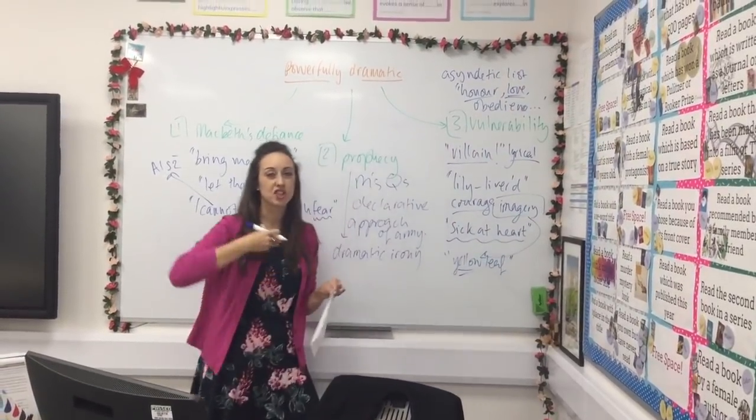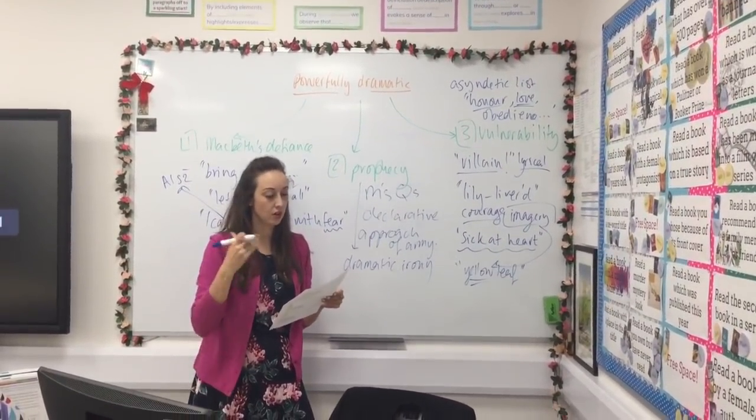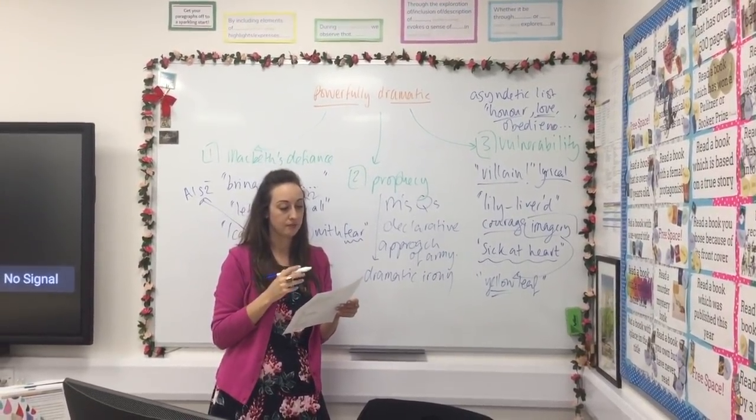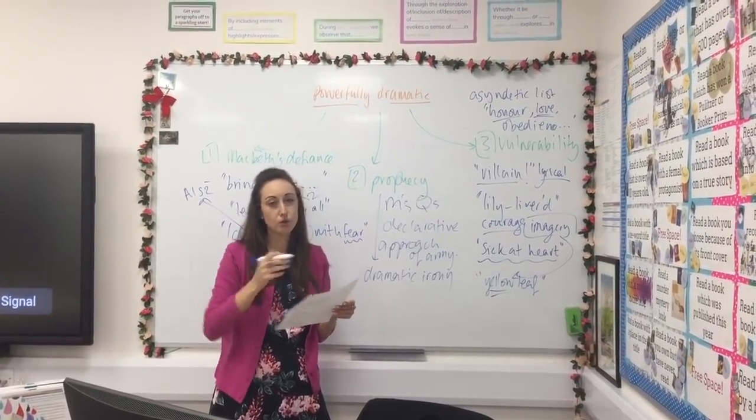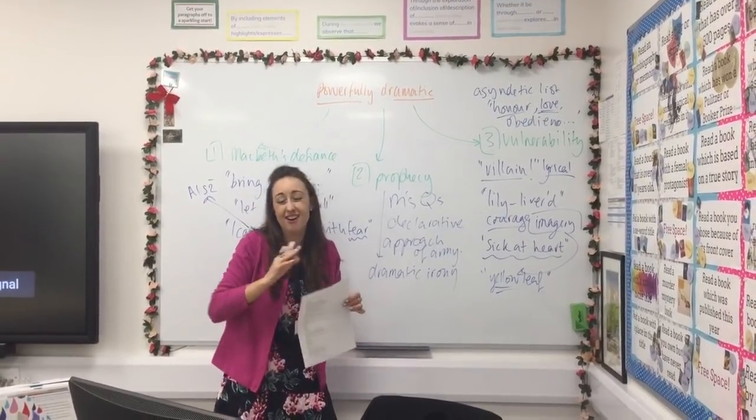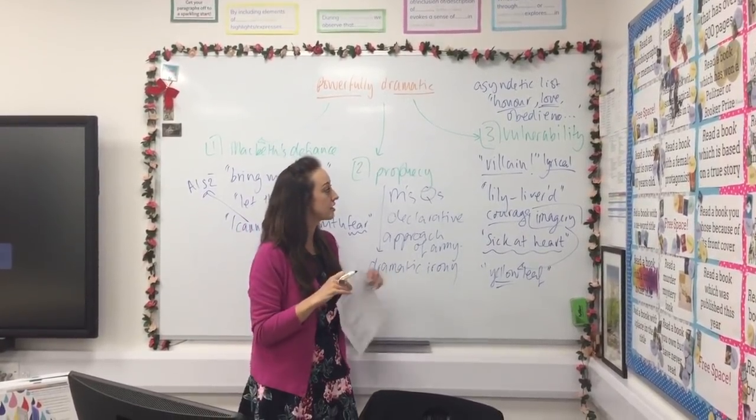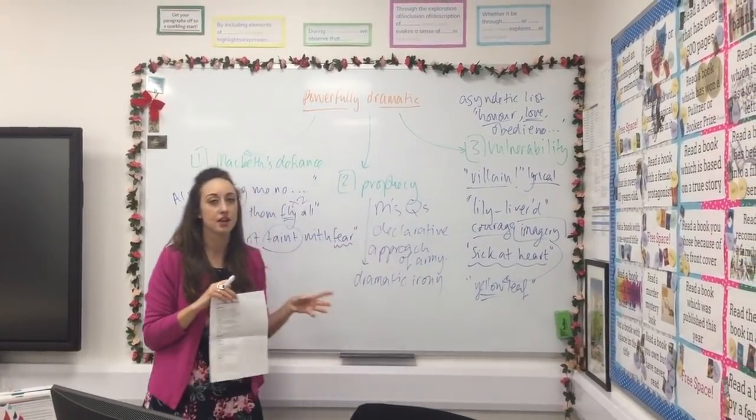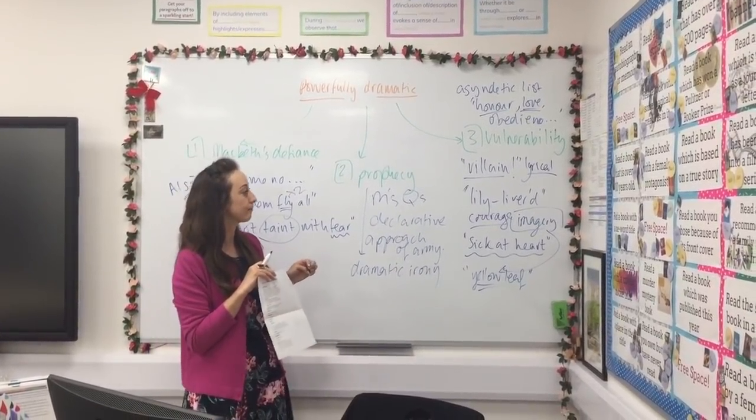Yeah he is alone so all of these things in this asyndetic list are particularly powerful because Shakespeare's heaping on the details honour love obedience troops of friends and I must not look to have. The modal verb must as well he's saying I can't have that anymore so there's loads of language stuff we can do for this and notice how I'm using lots of technical vocabulary in my analysis.